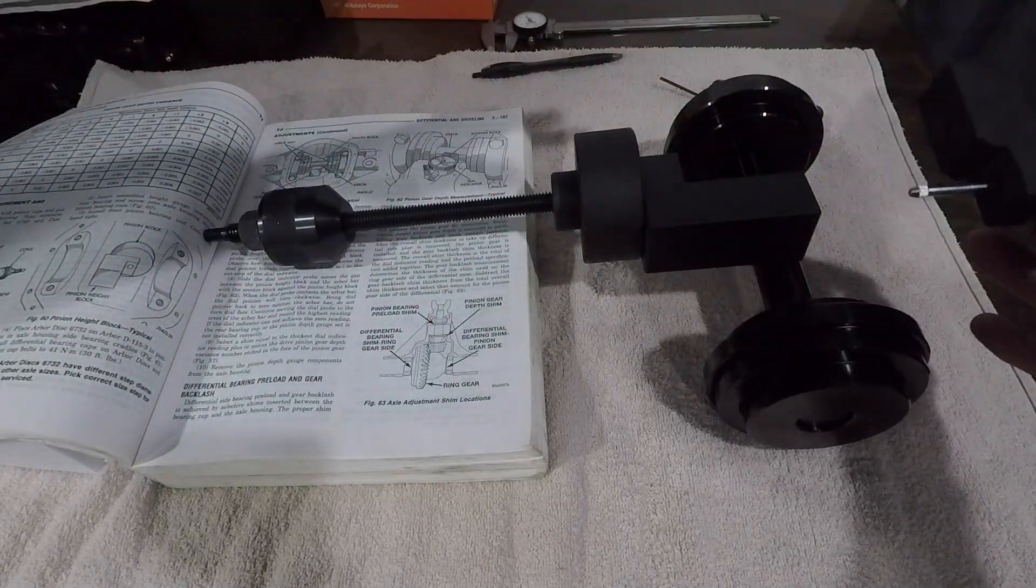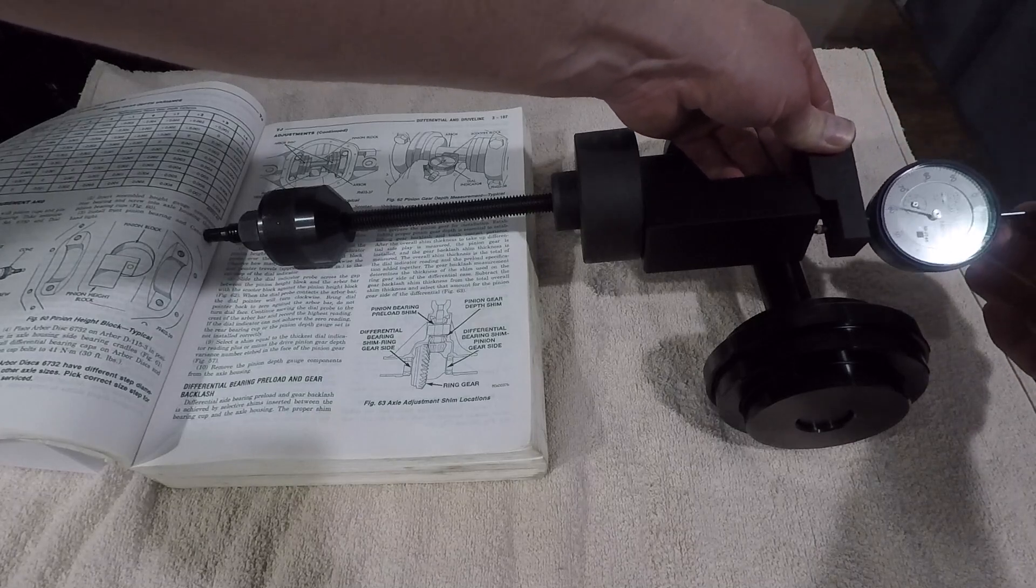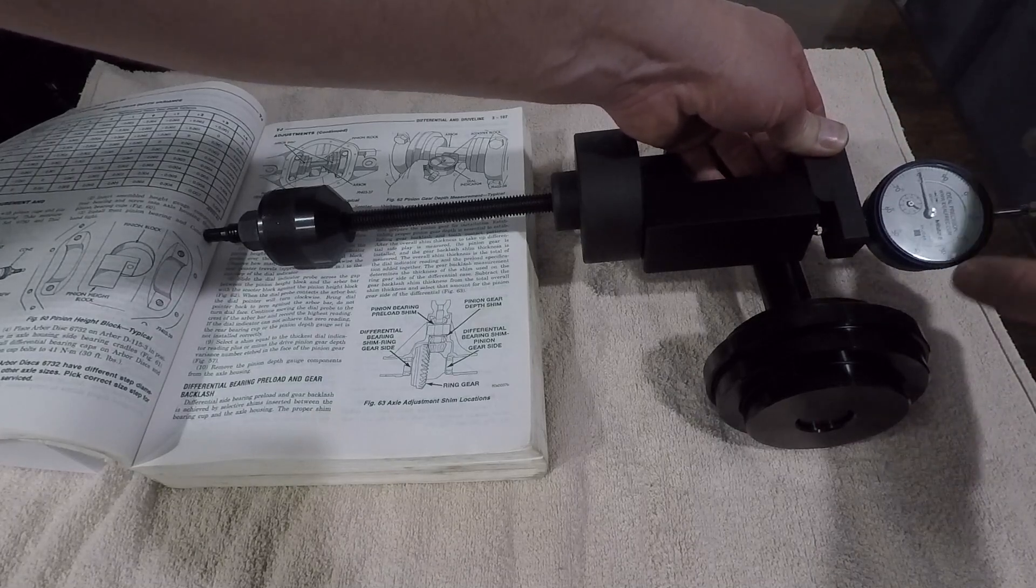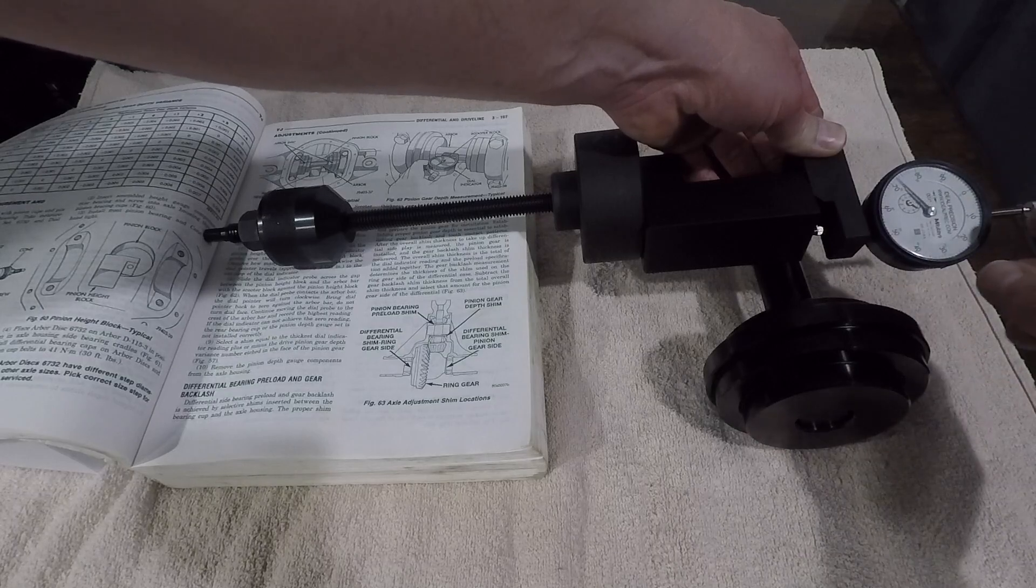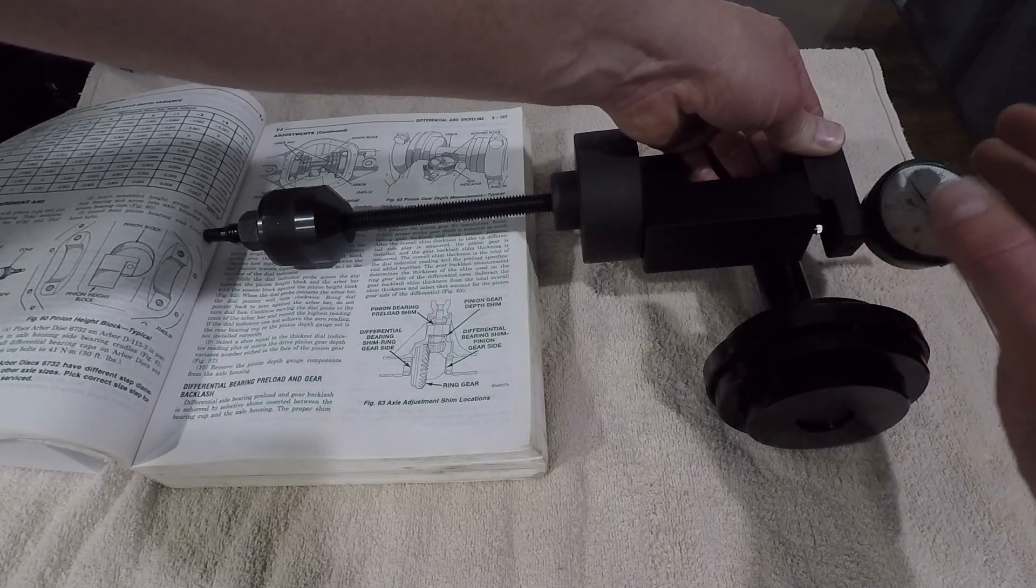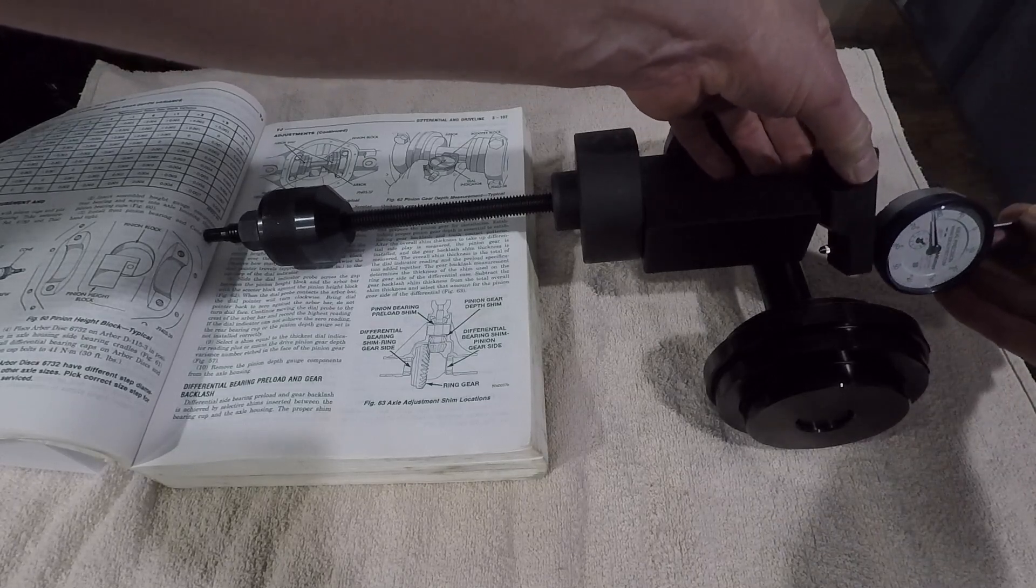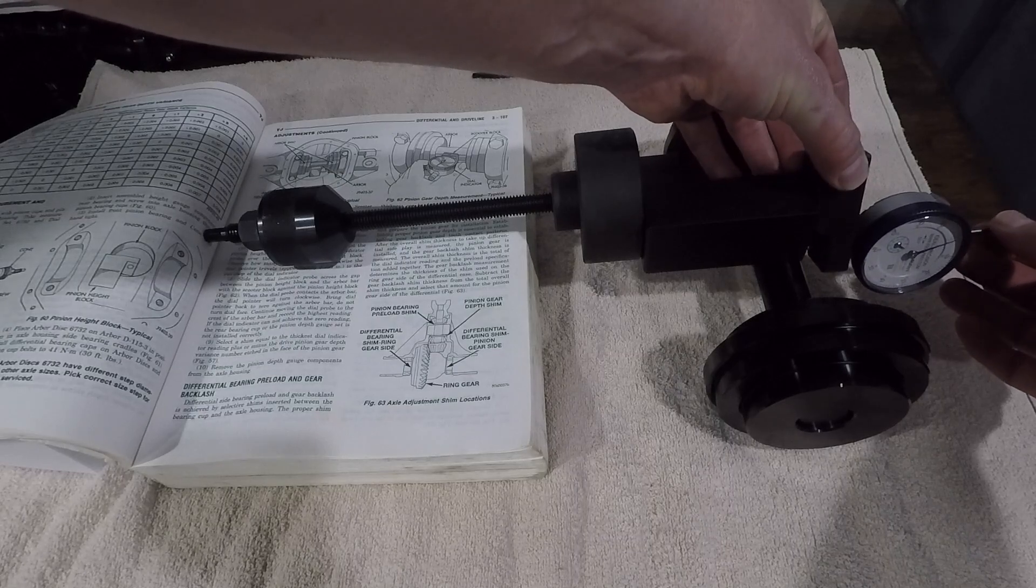This piece here is called a scooter block and I'm not really going to try and touch this because it will fall. What you would do is you would pull this thing out, place it right here, and once you find that this thing is steady and it's not moving, you're going to turn the dial to zero.